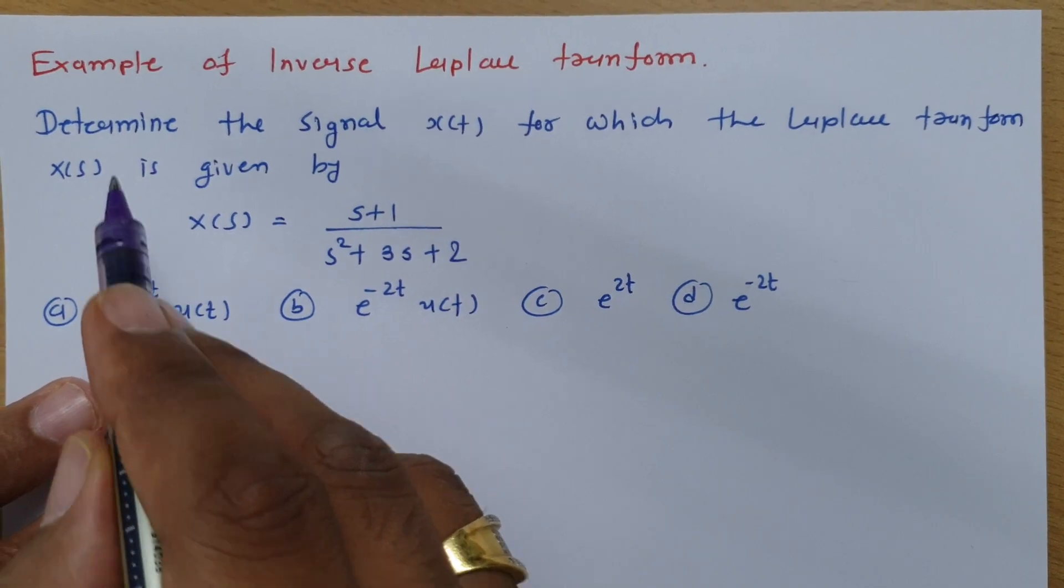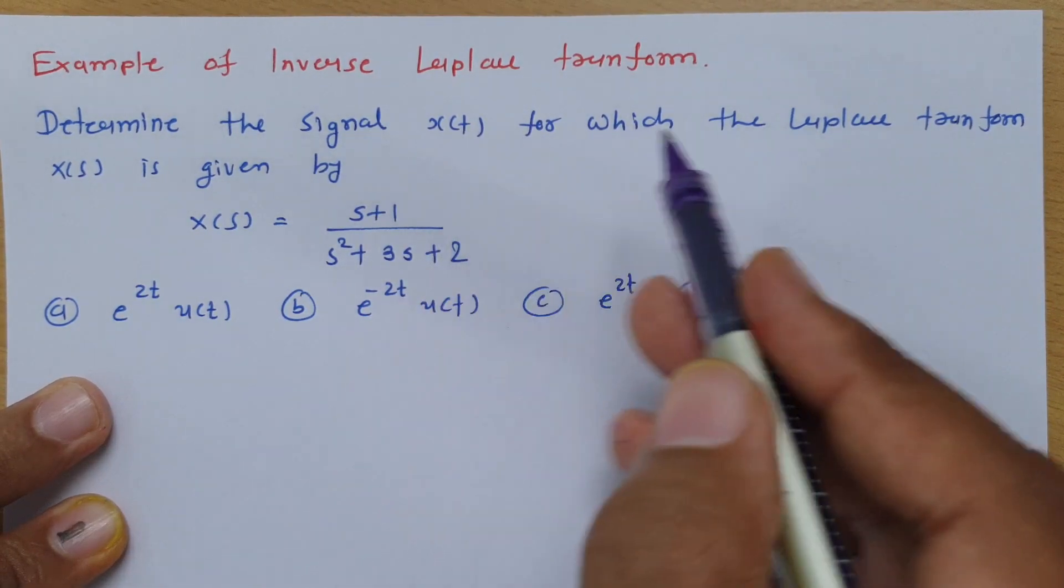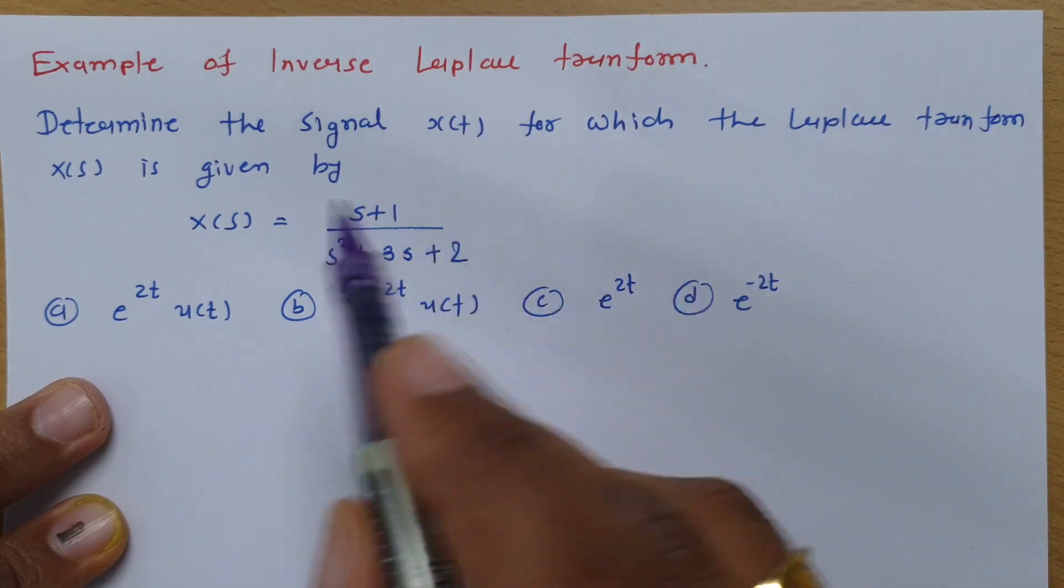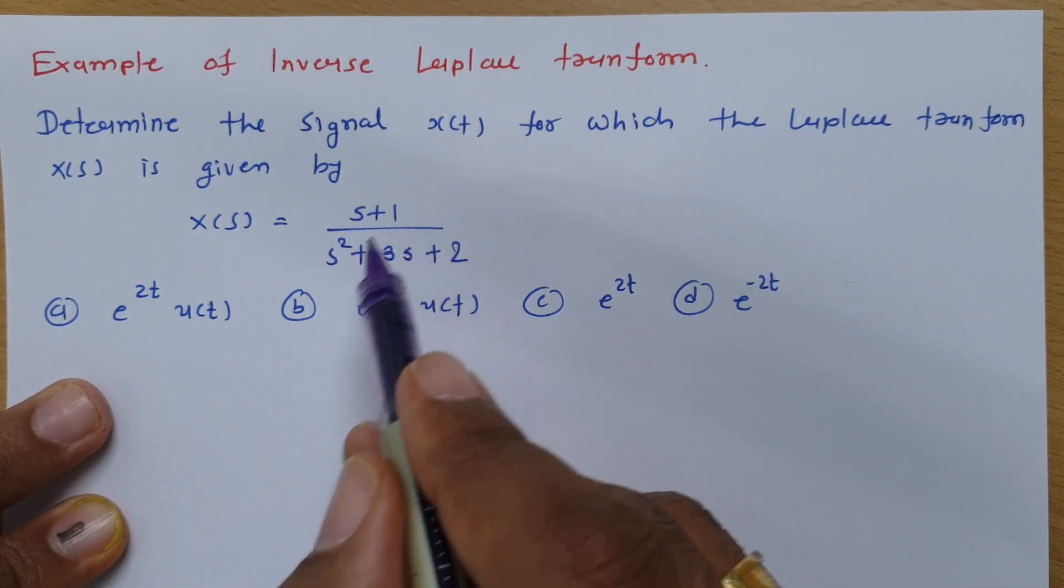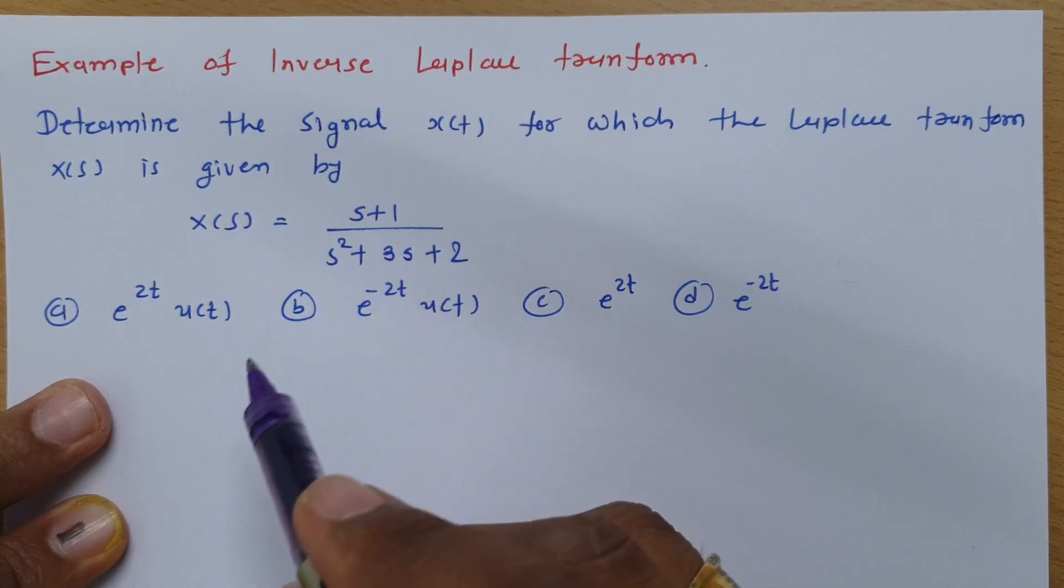And for that, the question is: determine the signal x(t) for which the Laplace transform X(s) is given by X(s) = (s+1)/(s²+3s+2).